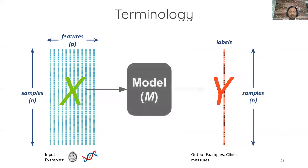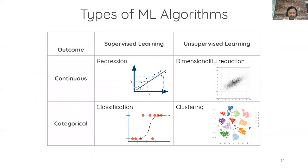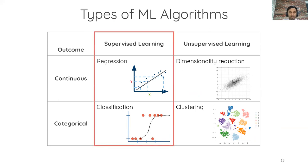The goal is to build or train a model that takes this complicated input and makes predictions as accurately as possible. Given the large number of algorithms within the machine learning umbrella, it helps to think of them in a two-by-two rubric. You can divide them by supervised versus unsupervised, and also by whether the outcome is continuous or categorical. In supervised learning, a continuous outcome is a regression problem and a categorical outcome is a classification problem. In this presentation, we'll mostly focus on supervised learning.